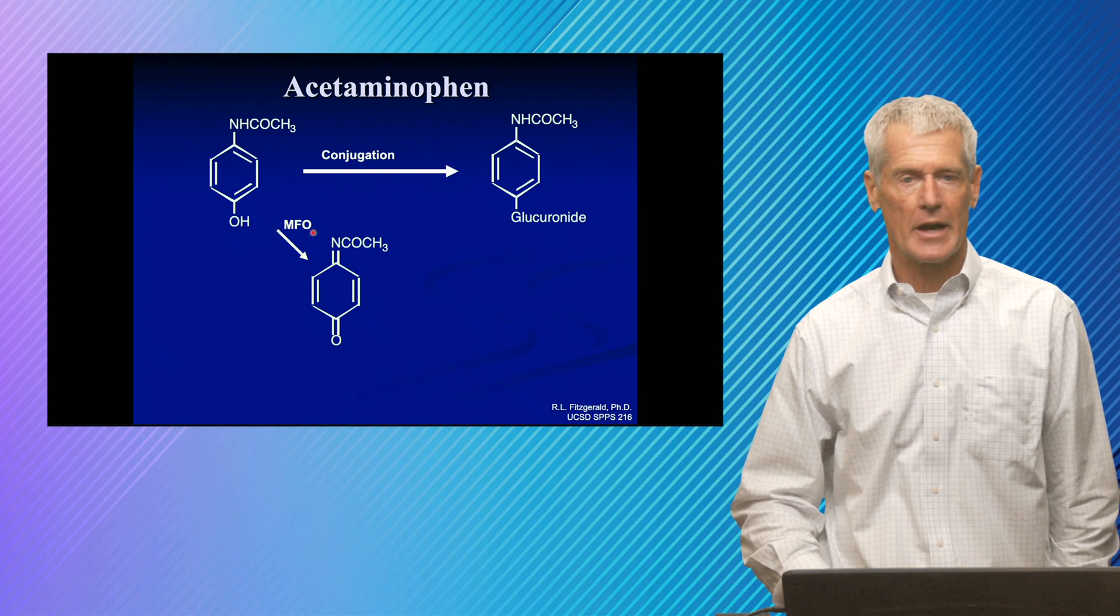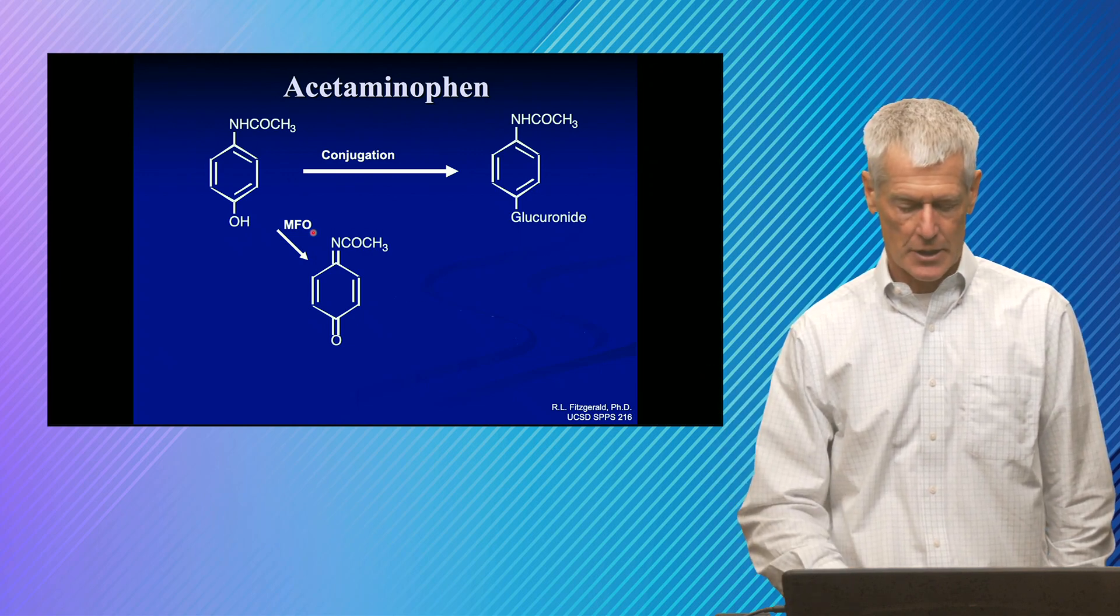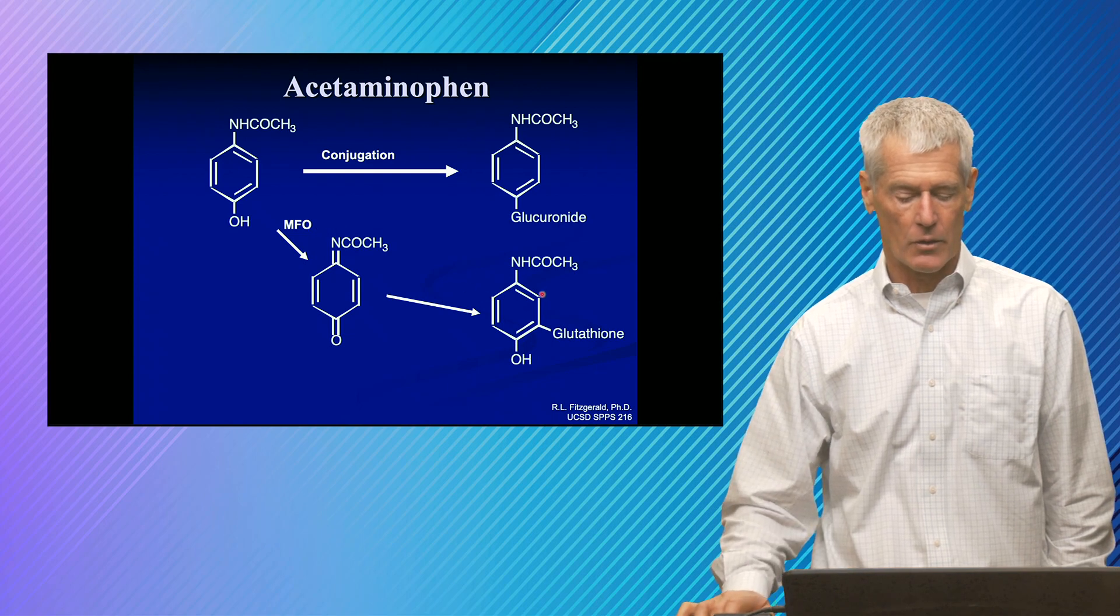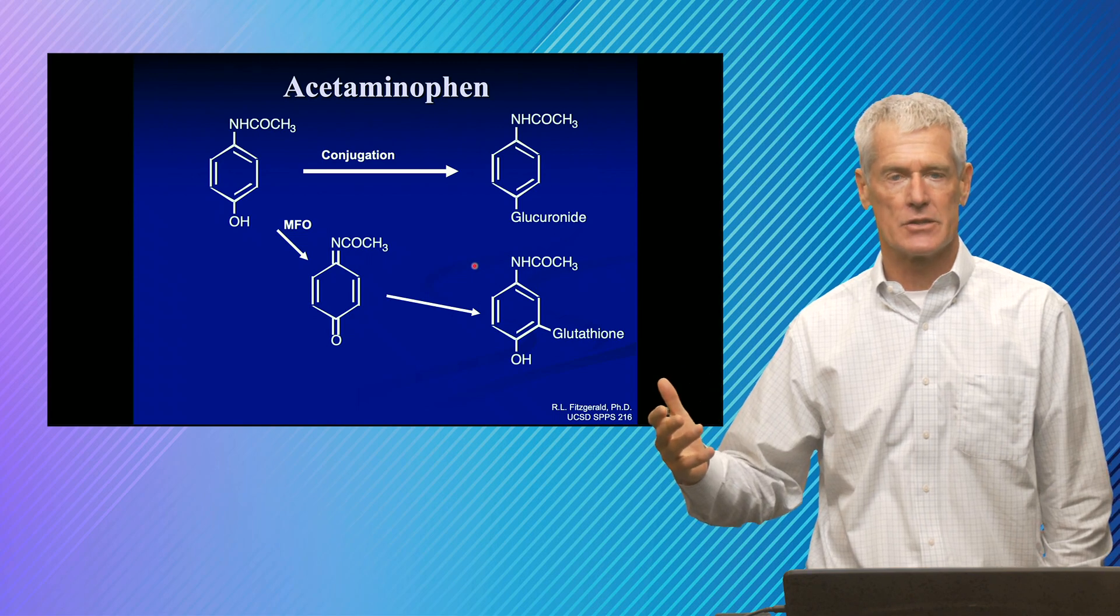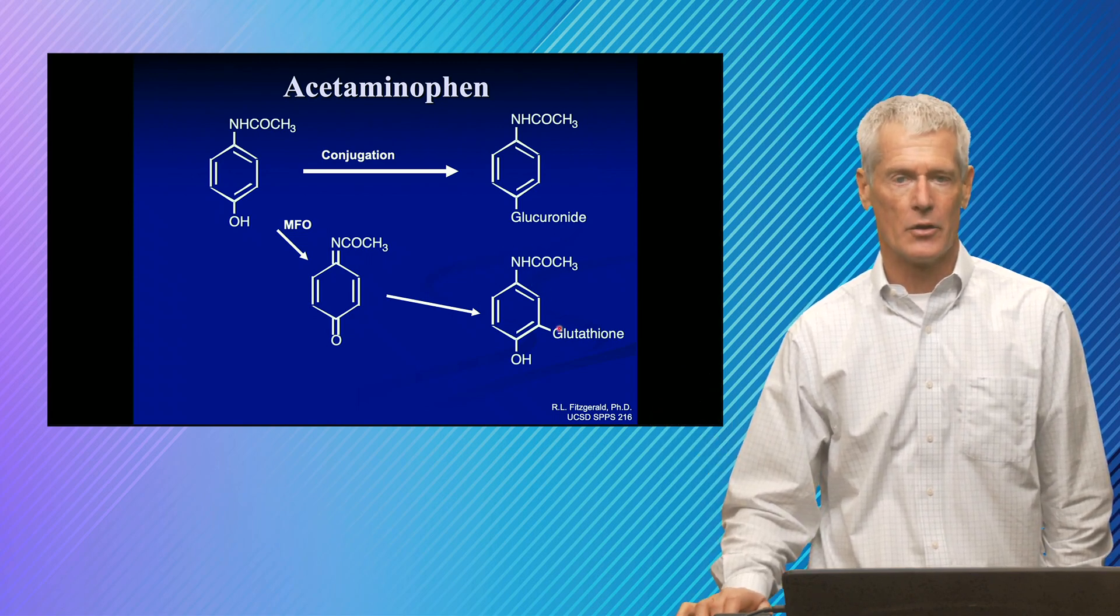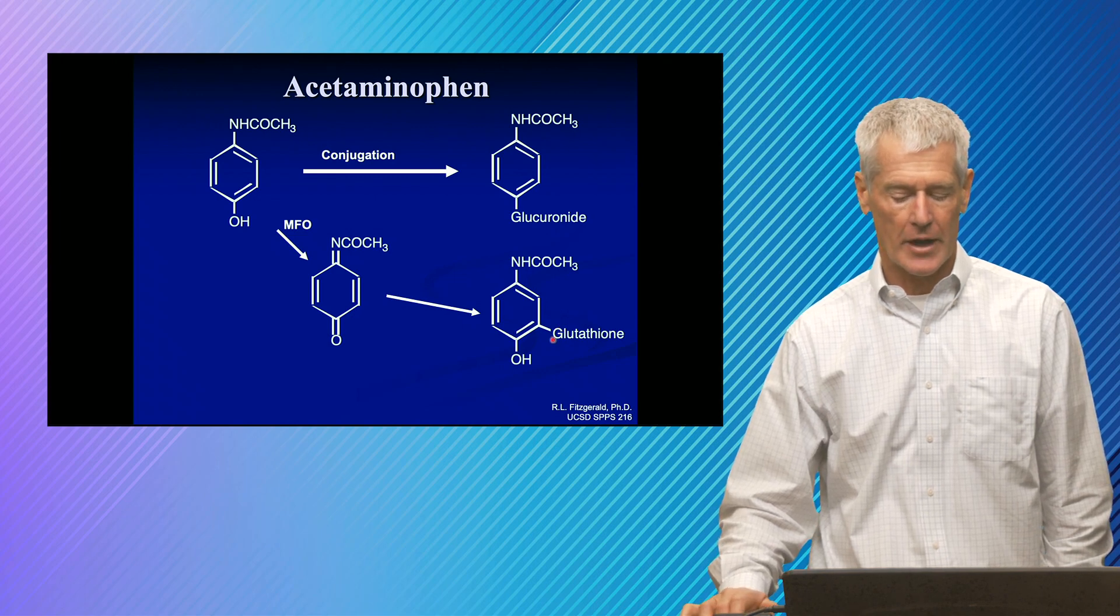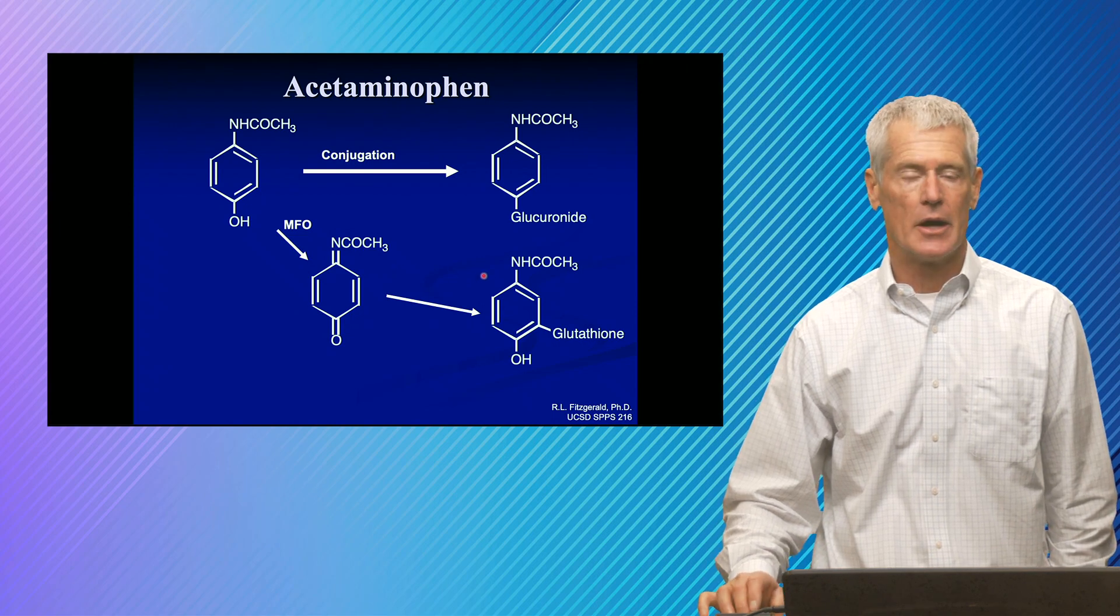In the liver, we have glutathione that has sulfhydryl groups that are very electron rich. And so as long as we have glutathione, we're protected. And that's why acetaminophen goes through several stages. And you don't get toxicity until you've wiped out the glutathione. So as long as glutathione is around, we're inactivating this toxic metabolite and everything is good.